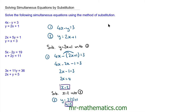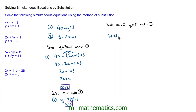To check our working, we can substitute x equals 2 and y equals 5 into equation 1. So we have 4 lots of x, which is 2, minus the y, which is 5, is equal to 3. Well, 4 times 2 is 8, and 8 take away 5 does make 3. So we know that our values of x and y are correct.